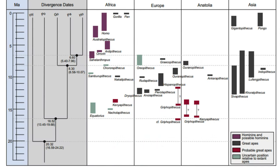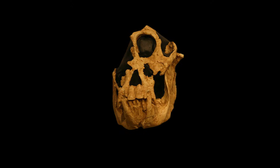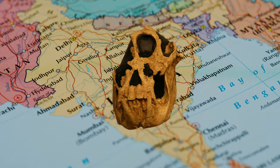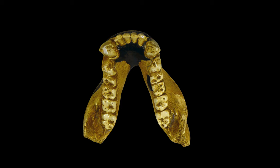Simons and Pilbeam proposed that African apes were related to an African species called Dryopithecus from 22 million years ago. Ramapithecus was proposed as a human ancestor from the Middle Miocene, based on jaw fragments found in India. Simons noted several characteristics that linked Ramapithecus to humans, including large molar teeth, a strong jaw, thick tooth enamel, reduced canines, and a parabolic dental arcade.